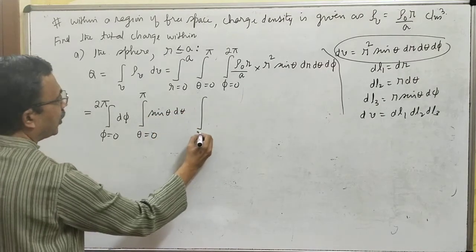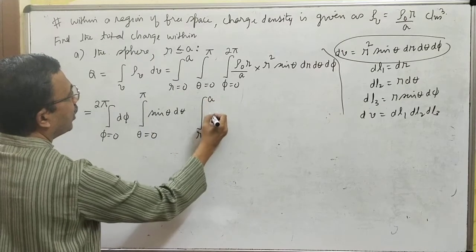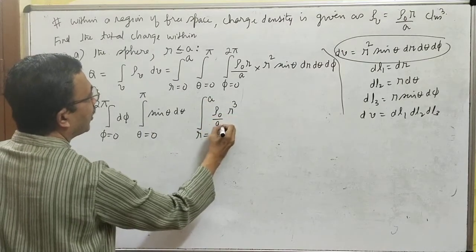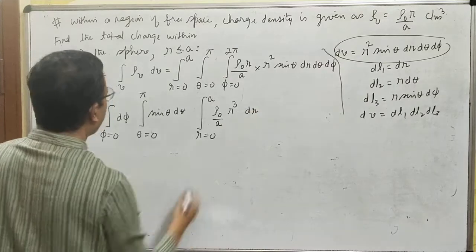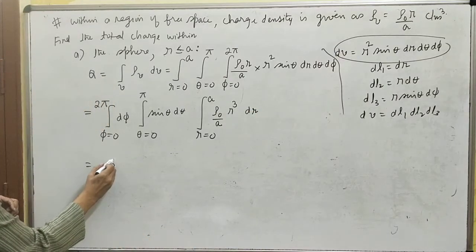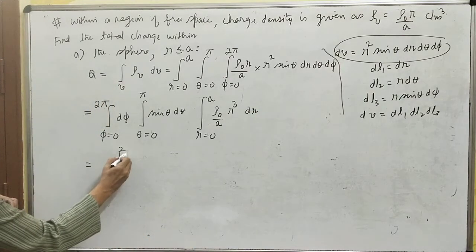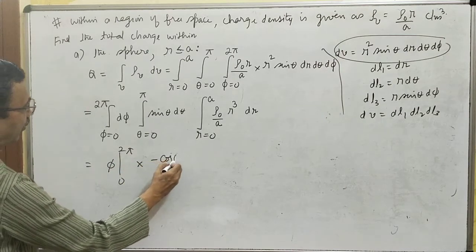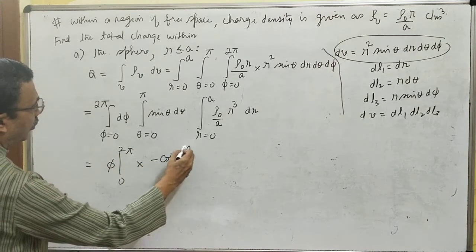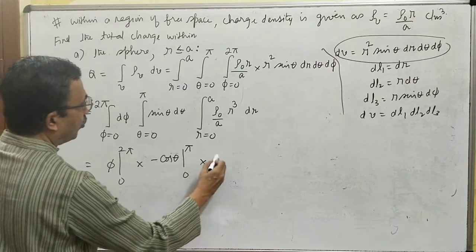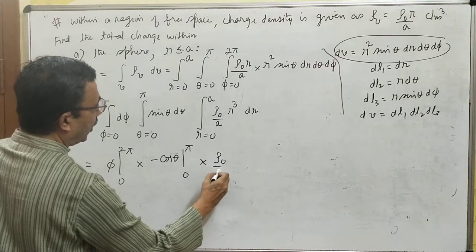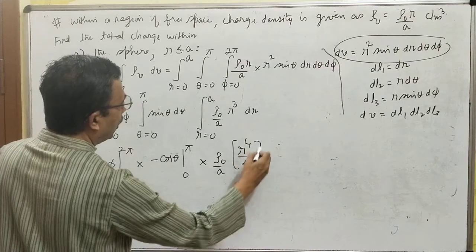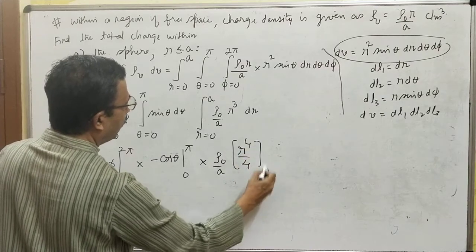Integrating over φ from 0 to 2π, and with ρᵥ · dV = ρ₀ · (r³/a) sinθ dr dθ dφ. Integrating sinθ gives −cosθ evaluated from 0 to π. Integrating r³ gives r⁴/4, with limits from 0 to a.